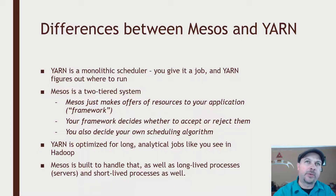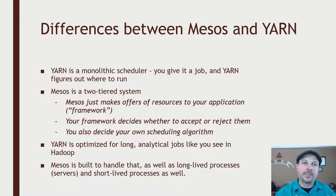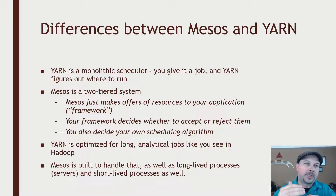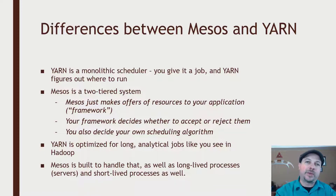So how does Yarn differ from Mesos beyond that? Well, Yarn is what we call a monolithic scheduler. With Yarn, you give it a job and Yarn figures out where to run it — it's just that one transaction. But with Mesos, it has a dual-tiered system. With Mesos, you don't say "here's an app, go figure it out" — Mesos makes offers of resources back to you, to your framework.